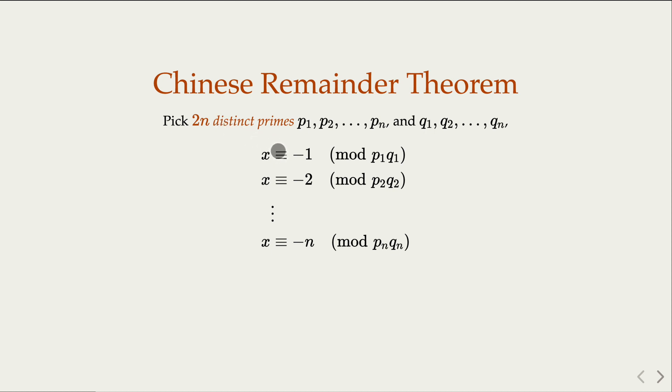And the Chinese Remainder Theorem tells us there is a solution. So if x satisfies all these congruence equations, we know that x plus 1 is gonna be a multiple of p₁q₁, x plus 2 multiple of p₂q₂, and so on and so forth.